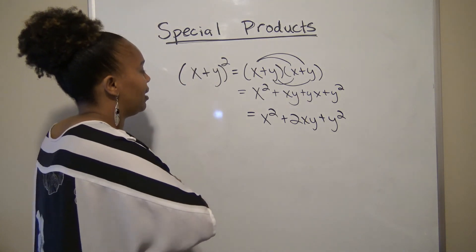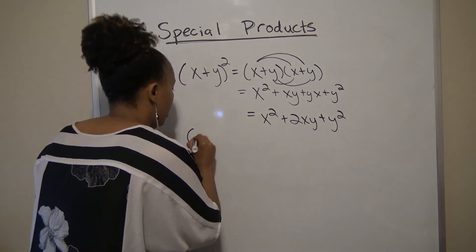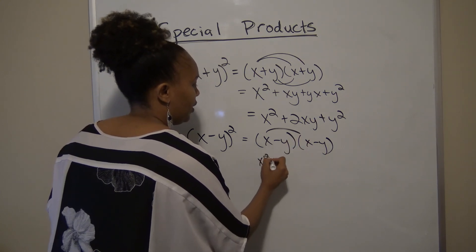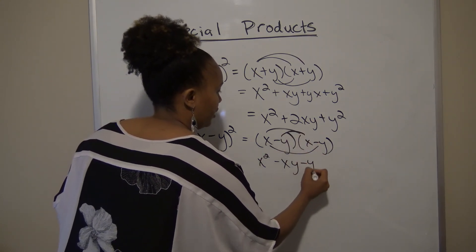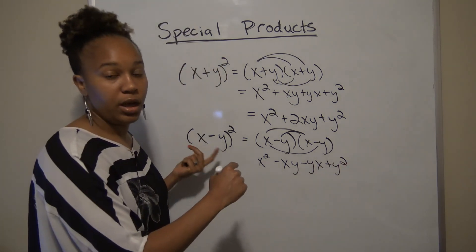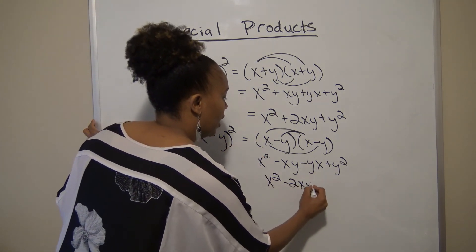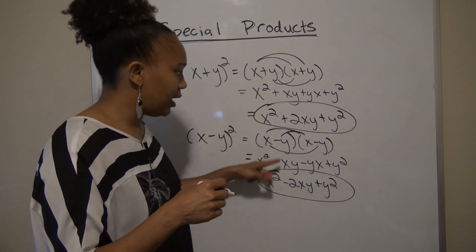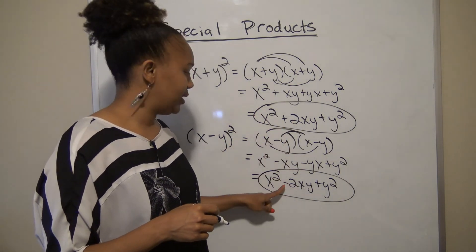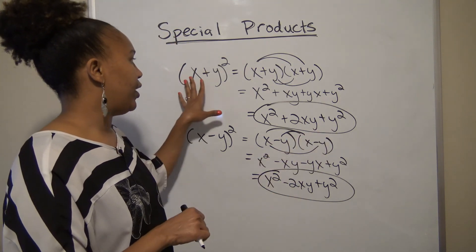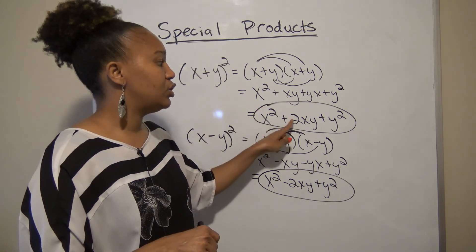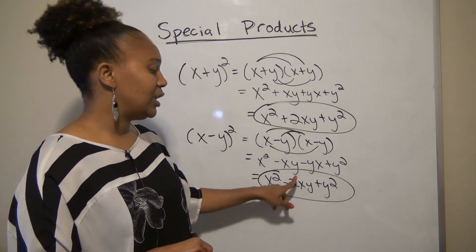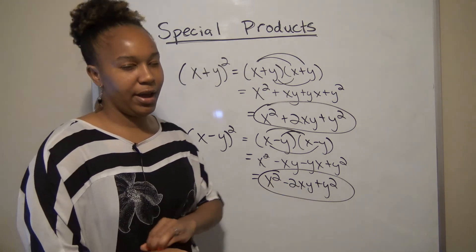If I change the plus to a minus — so instead of (x + y)² it's (x − y)² — you get something similar but with a change of sign. Foiling (x − y)(x − y) gives x² − xy − yx + y², and since xy and yx are like terms they combine to give x² − 2xy + y². So the difference is: squaring (x + y) gives +2xy in the middle, while squaring (x − y) gives −2xy in the middle.